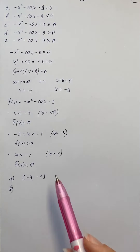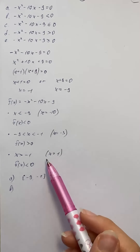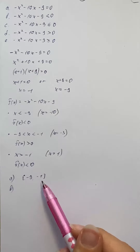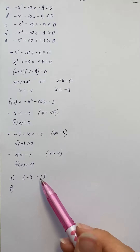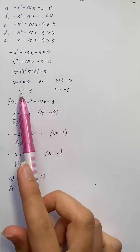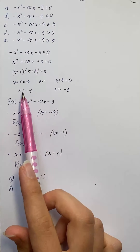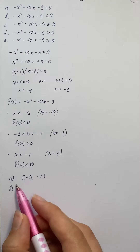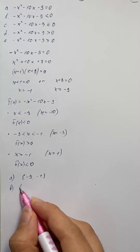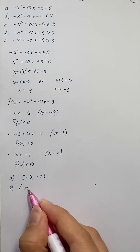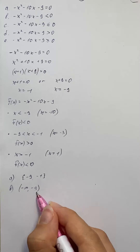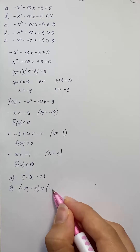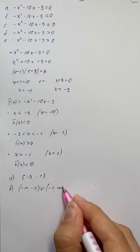The boundary points are not included and the solution set is all real numbers except values between negative 9 and negative 1. So the solution set for the inequality is negative infinity to negative 9, union negative 1 to infinity.